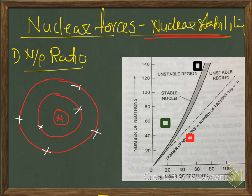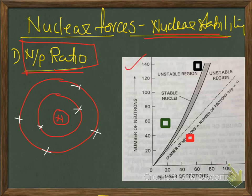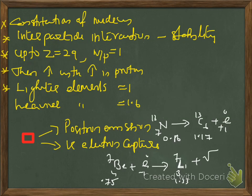For this purpose, we are first explaining the n/p ratio, where n is the number of neutrons and p is the number of protons. The neutron-proton ratio of a nucleus will ultimately decide whether that nucleus belongs to the category of stable nucleus or unstable nucleus. Nuclear stability can be explained using the n/p ratio, and it is plotted in a graph with number of protons along the x-axis and number of neutrons along the y-axis. The constitution of nucleus and inter-particle interaction and stability — how they are related — is also explained.